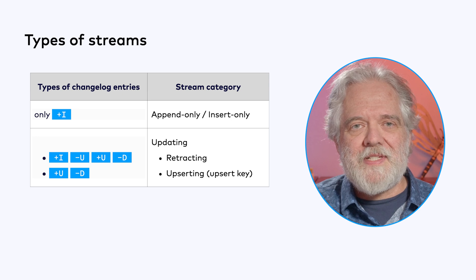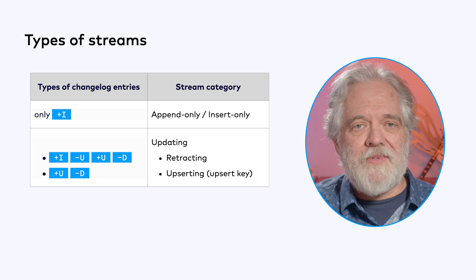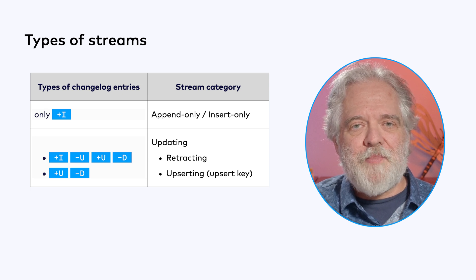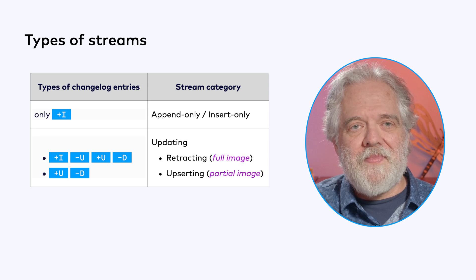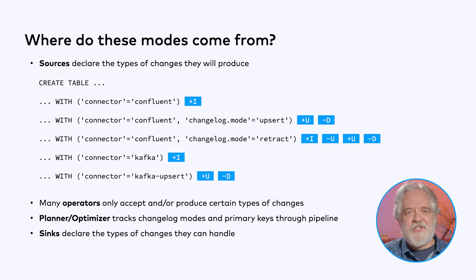On the other hand, upserting streams don't use retractions or inserts. These streams leverage the table's primary key, which we'll call the upsert key. By the way, these concepts aren't new — in the world of change data capture, the terms full and partial image are used to describe these two different ways to encode updates. Now let's look at how the Flink SQL planner knows which changelog mode is being used at each stage of the stream processing pipeline. The sources you create declare what types of changes they will produce. In some cases this is declared explicitly, while at other times this happens implicitly.